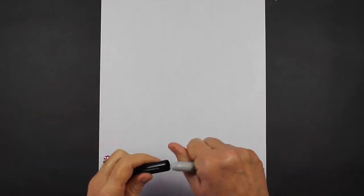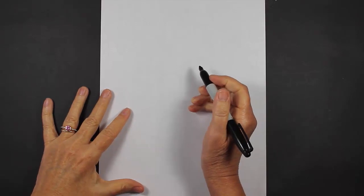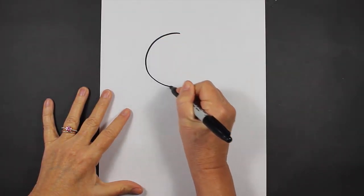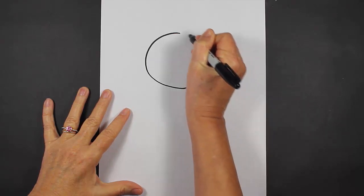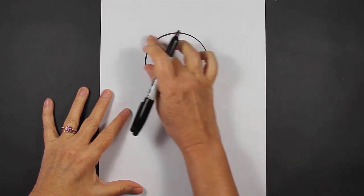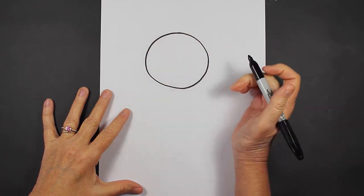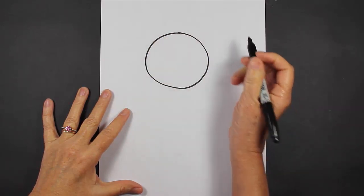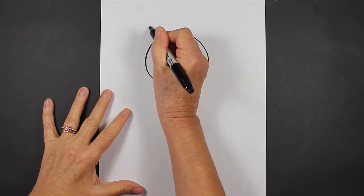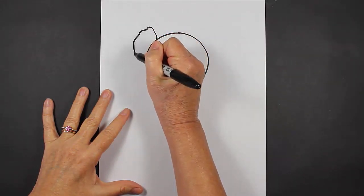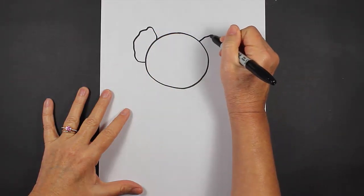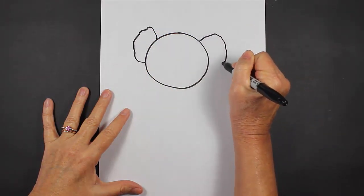The first thing that we're going to do is make our koala bear's head and that's just going to be a nice round circle. At the top of our circle on the sides here we're going to make our koala bear's ears. Now koala bear ears are not super round, so I'm going to kind of make them a little bit bumpy like this. You see that, how I did that? I came up, I made it a little bumpy and I came around.